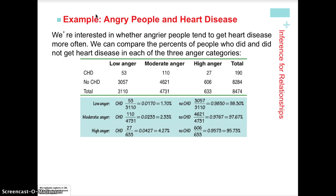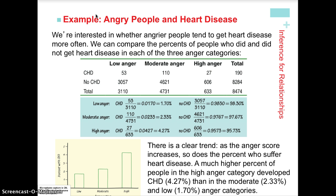We look at the conditional distributions for each of the anger divisions and see how they're split amongst coronary heart disease or no coronary heart disease. A graph shows there does appear to be a big difference — as the anger score increases, so does the percent who suffer heart disease. A much higher percent of people in the high anger category developed coronary heart disease compared to the moderate and low anger categories.